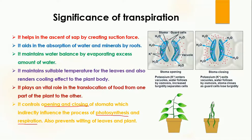Stomata open when water molecules move into the guard cells. This happens because potassium ions enter the guard cells, and water molecules always follow potassium ions. As potassium ions move inside, water molecules also move inside, causing turgidity in the guard cells, which in turn causes the stomata to open. When the stomata is open, carbon dioxide can enter and oxygen can come out.